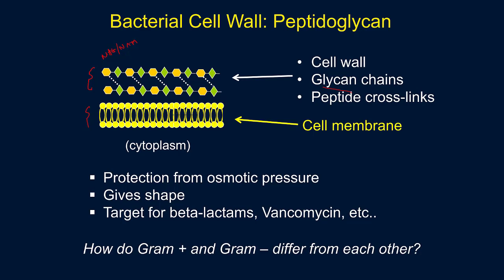The cell wall is important for the bacteria because, as a unicellular organism, it needs to be protected against changes in osmotic pressure. It also gives bacteria their shape — we briefly refer to shapes as rod-shaped and cocci. All of that is determined by the cell wall components within the bacteria, and more specifically, by the enzymes that are present there. About a third of the drugs, if not more, target the cell wall in one way or another.